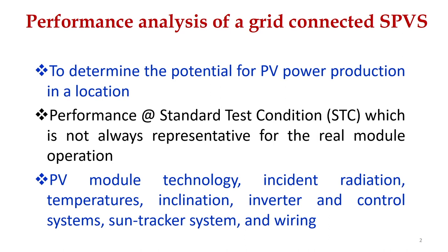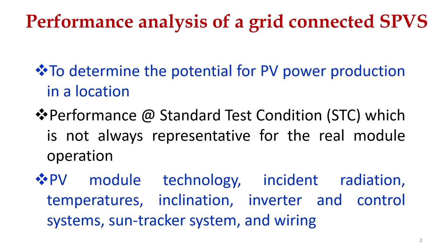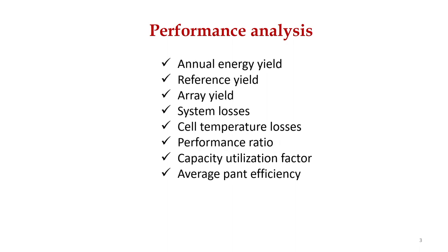The performance of a solar grid-connected PV system depends on module technology, incident radiation, temperatures, inclination, inverter efficiency, control systems, sun tracking systems, and wearings. If we have to talk about performance analysis, these are the parameters which influence the performance of a grid-connected PV system.